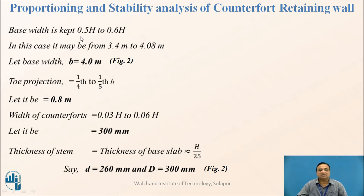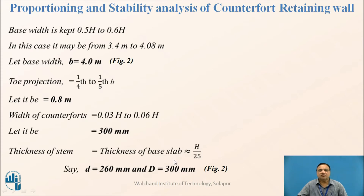The base width is kept between 0.5H and 0.6H, working out to between 3.4 and 4.08 m; we consider it as 4 m. Toe projection is one-fourth to one-fifth of base width, giving 0.8 m. Width of counterfort is 0.03H to 0.06H, taken as 300 mm. Thickness of stem and base slab are both H/25, giving 300 mm overall depth. Taking an effective cover of 40 mm, effective depth is 260 mm.